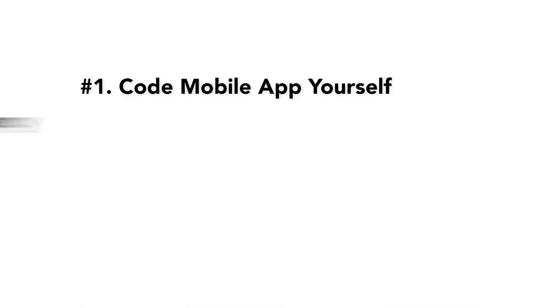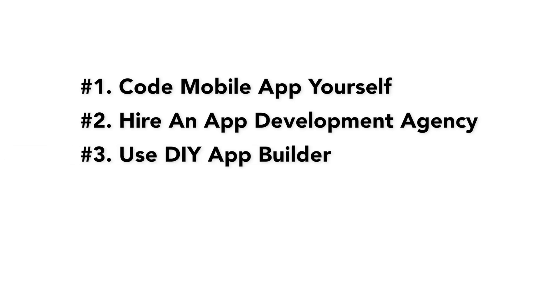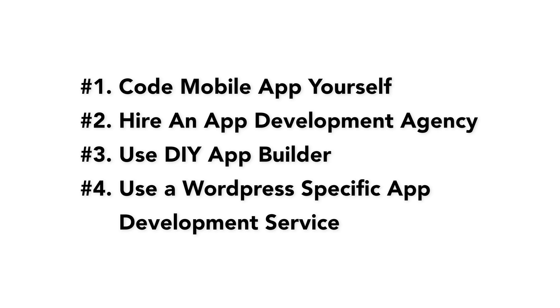When creating a mobile app for your WordPress site, you have a number of options to consider. The main options are: code the mobile app yourself, work with an app development agency, use a do-it-yourself app builder, or use a WordPress-specific app development service. I'm going to walk you through these options and review the pros and cons of each to help you choose the best option for your business.